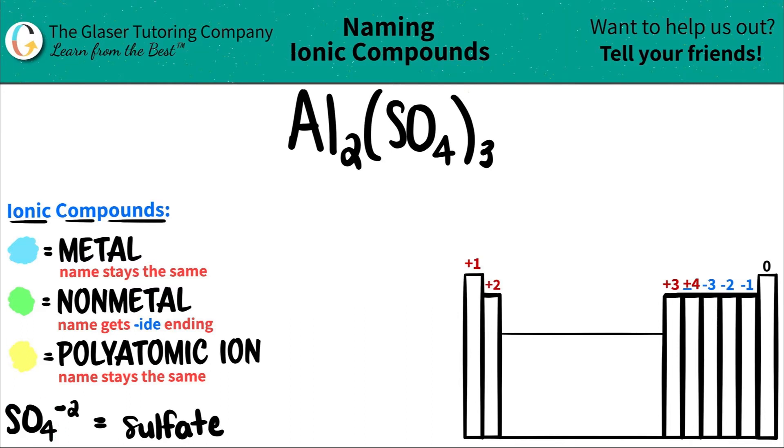So SO₄, which always has a negative two charge, it always gains two electrons, is always called sulfate. And here is the SO₄. There's the polyatomic sulfate, SO₄.